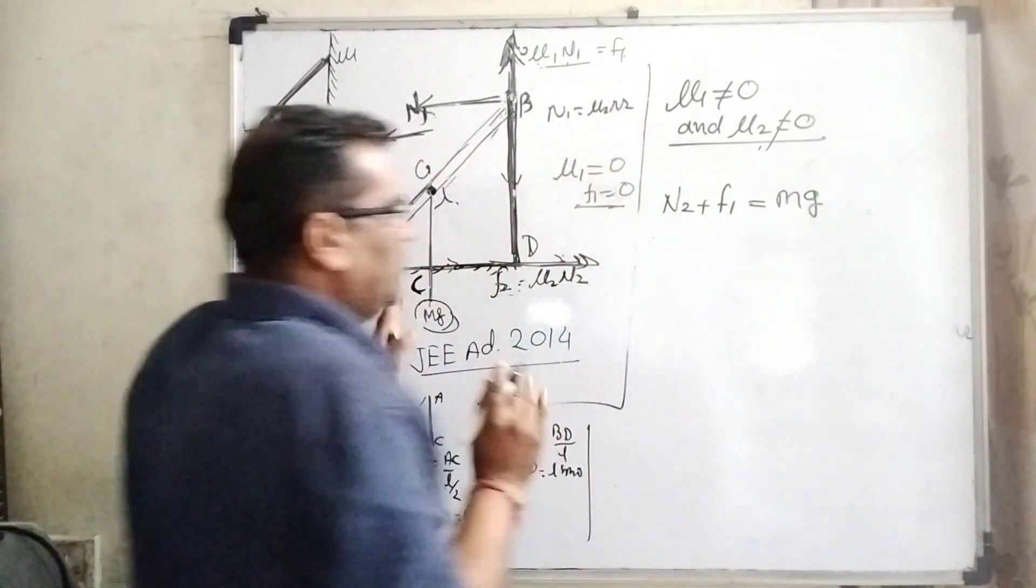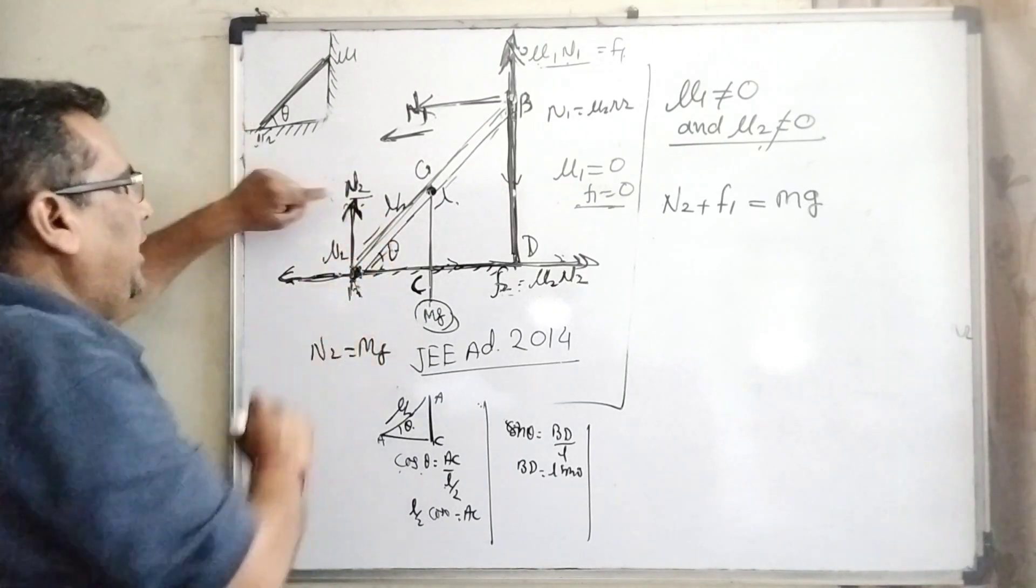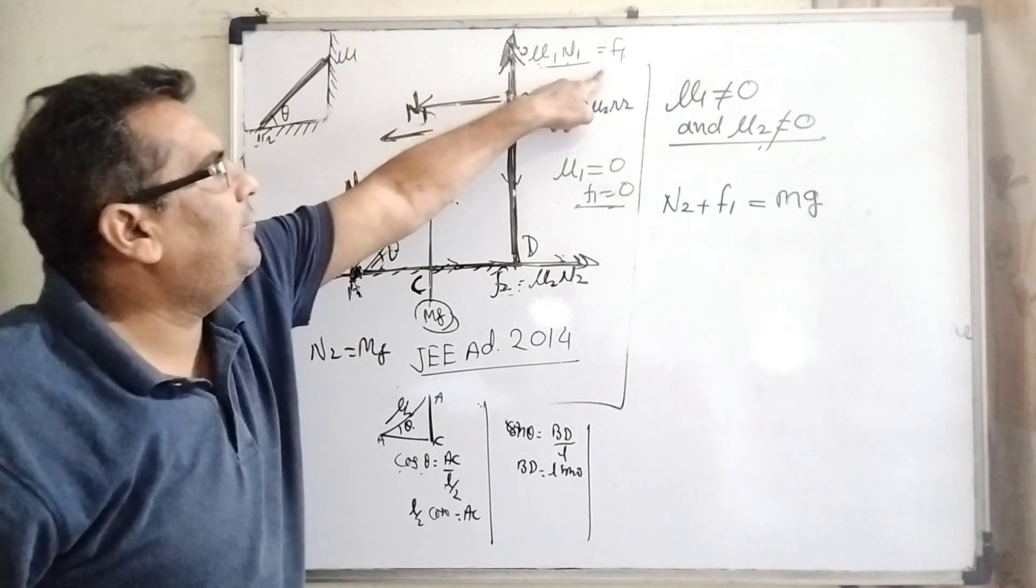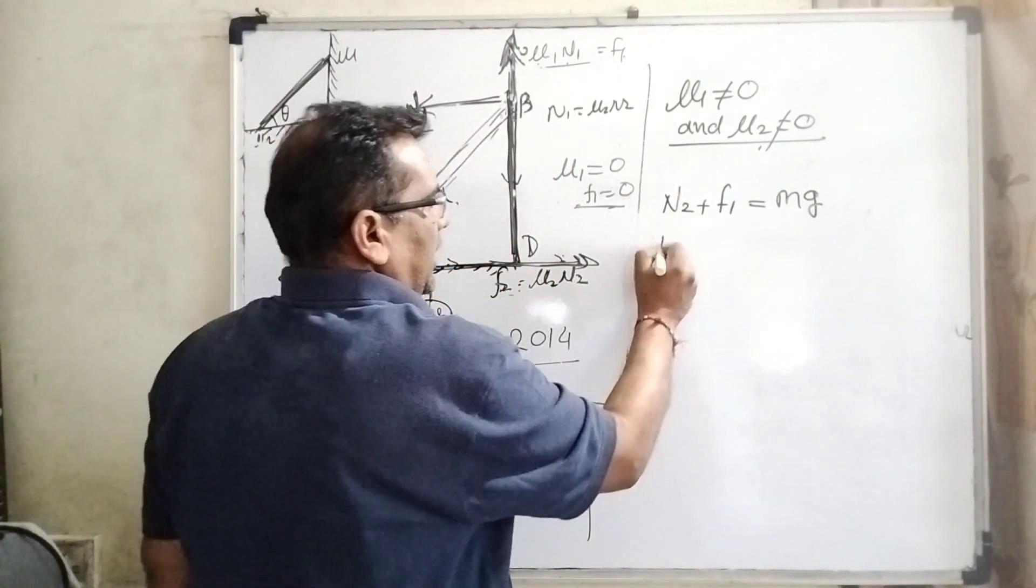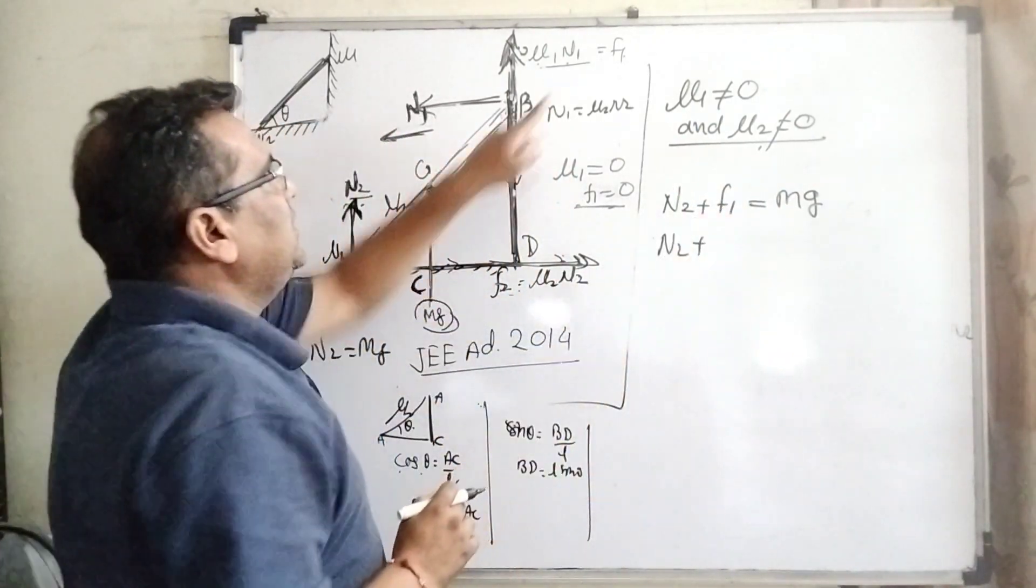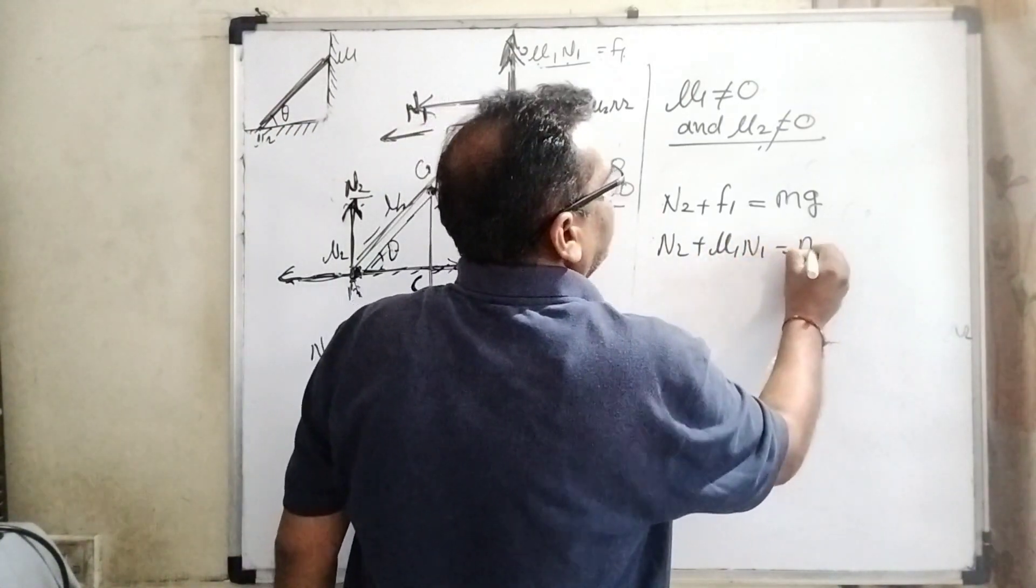This is equal to downward direction forces. Mg is the downward force. I hope you have understood which are upside forces. Look at the picture again: N2 and here f1. N2 plus f1 equals mg.